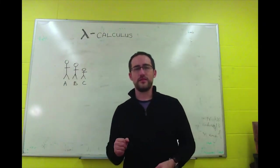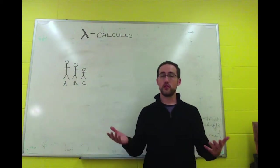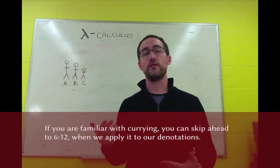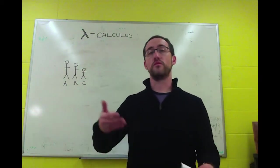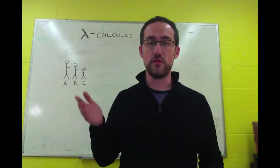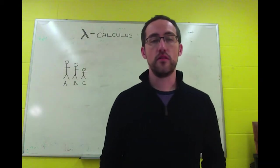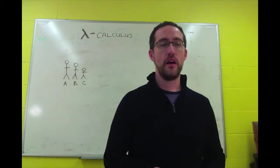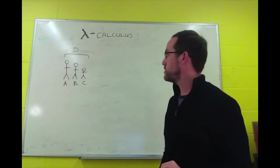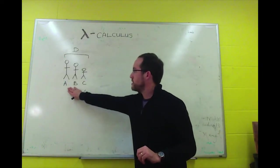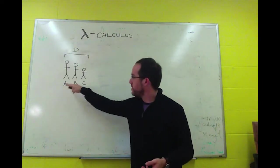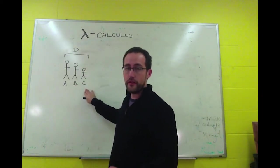So how do we turn our two-place function into something that fits this tree? There's a process called currying. Currying takes a two-place function and breaks it into a sequence of one-place functions. It works with any number of arguments — you always break it down into a series of one-place functions. Let me show you an example. Take the predicate 'is taller than': x is taller than y. In this case, say a is taller than b, and b is taller than c.